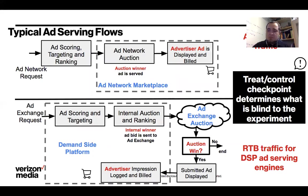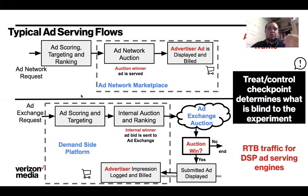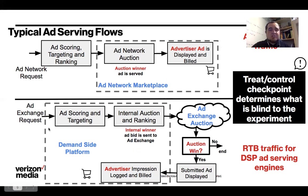To understand the approach, let's review the typical ad serving flow. The point at which we introduce the treatment/control checkpoint determines what is blind to the system. In an ad network, we have ad scoring and targeting rankings — a ranked list of best ads based on ML — then an ad network auction selects the best ad to display. Within ad exchanges, if you're a DSP, it's similar with an additional internal auction step to identify which ad to send to the external exchange; whether you win or lose is determined by the ad exchange and reported back to the DSP.